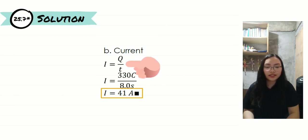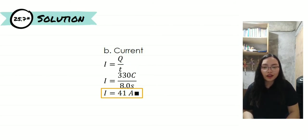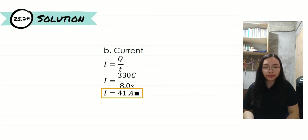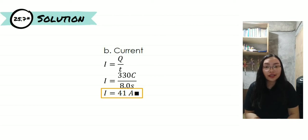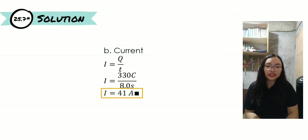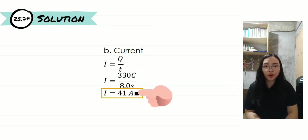For Part B, we have 330 coulombs all over 8.0 seconds, and thus the result is I, or the current, is equal to 41 ampere.